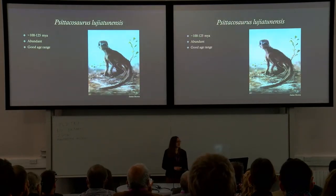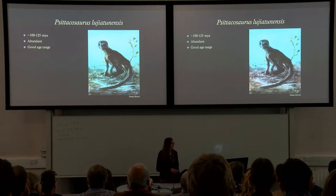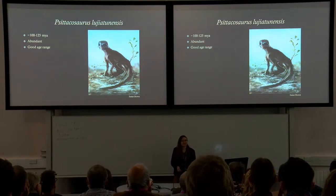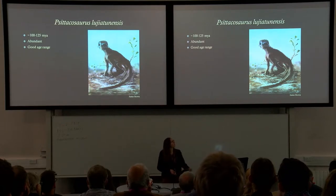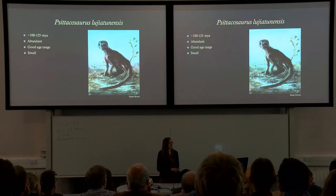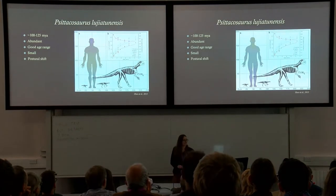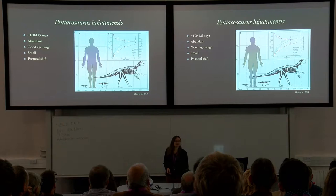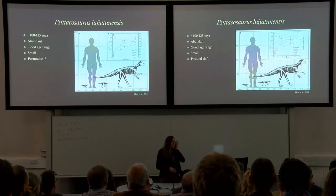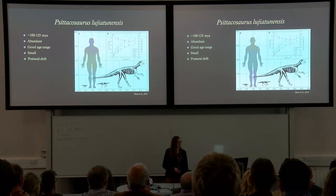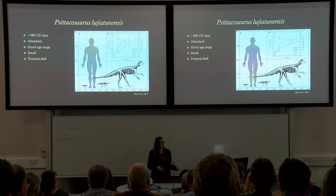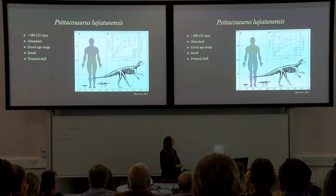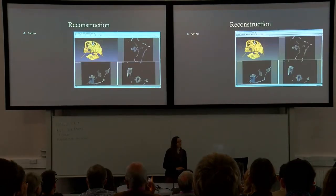We also have great ontogenetic sequences of Psittacosaurus, from hatchlings all the way through to fully grown adults. They're also very small for ceratopsians, growing to around two meters maximum, which is important when using CT scanners. They're also a genus for which a postural shift has been proposed: Chi Zhao, one of my supervisors, did a histological study of the long bones and found they developed from a quadrupedal juvenile to a bipedal adult, with this change occurring around four to five years old.